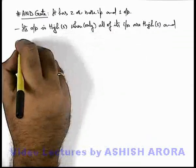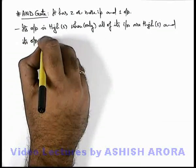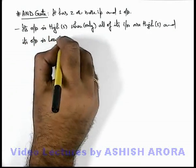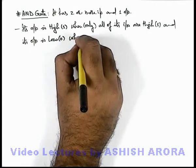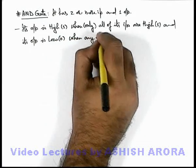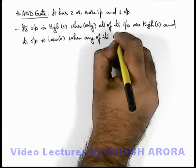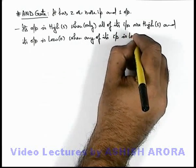And we can write its output is low, that is in state zero, when any of its input is low, that is in state zero.